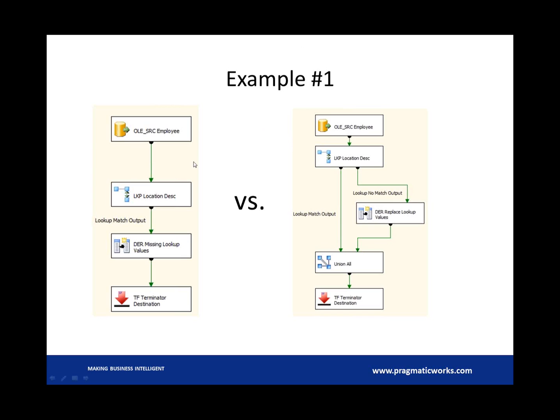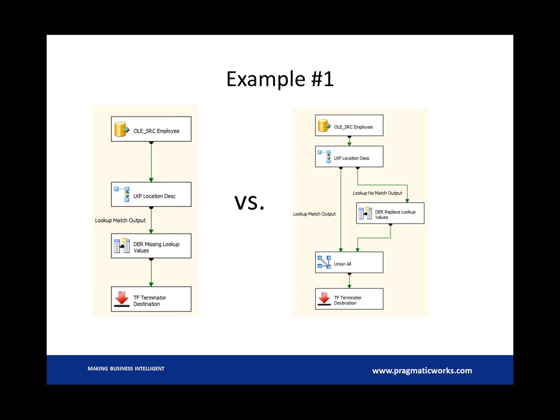What that means is that for each execution tree - let me back up a little. So this is an execution tree. It's from the beginning of one asynchronous to the final point where another asynchronous. These two, the lookup task and the derived column output are synchronous tasks. That's one execution tree. One buffer.